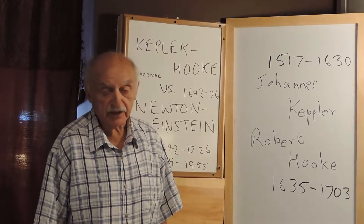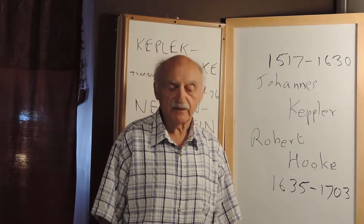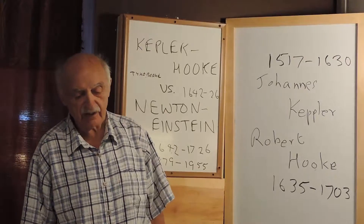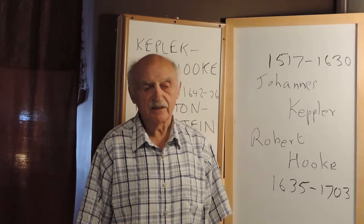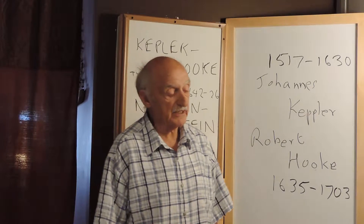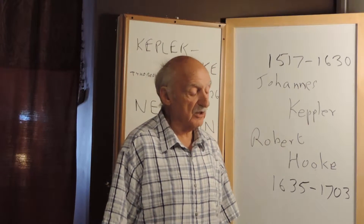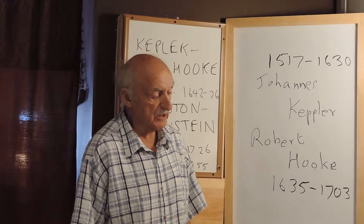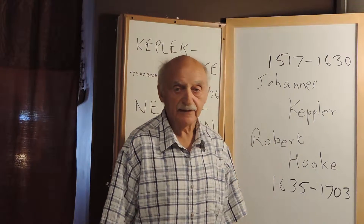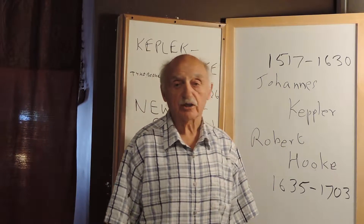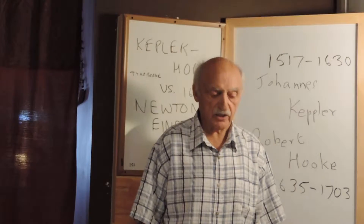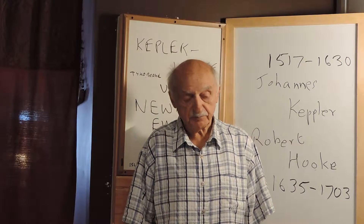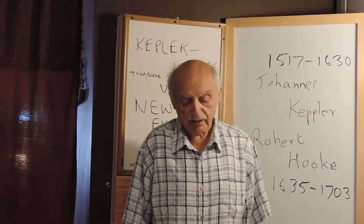Brahe lived before the days of telescopes, and he must have had a tough time, but he did have the advantage of not having the light pollution that we have and could see stars and planets much better. He watched them very carefully, studied them, and had some measuring instruments to locate their relative positions. He was able to determine that Mars is not in a perfectly circular orbit, but in a very rounded ellipse.